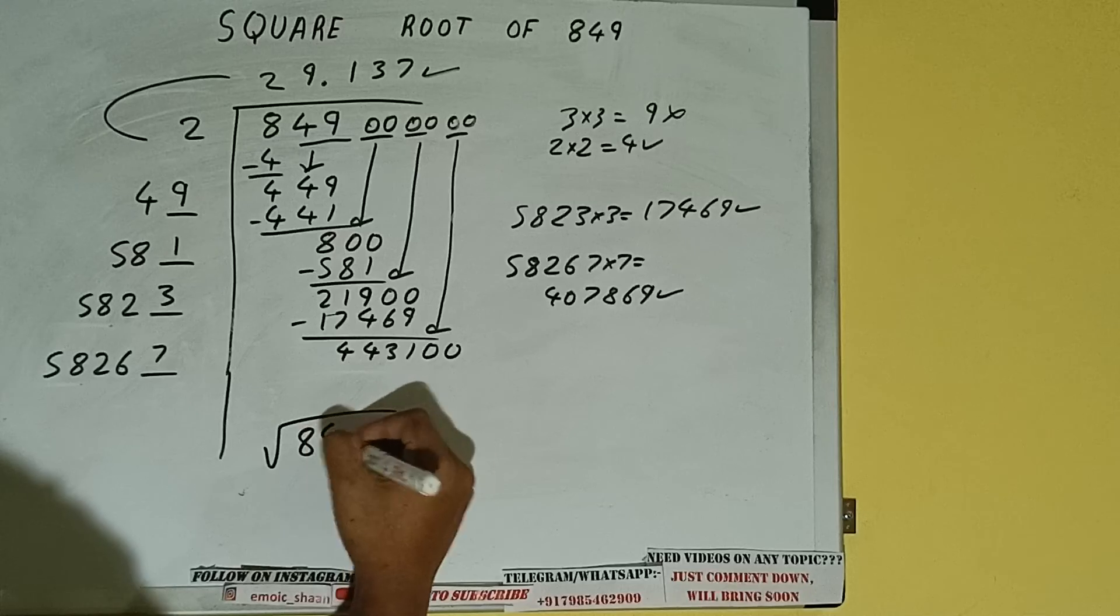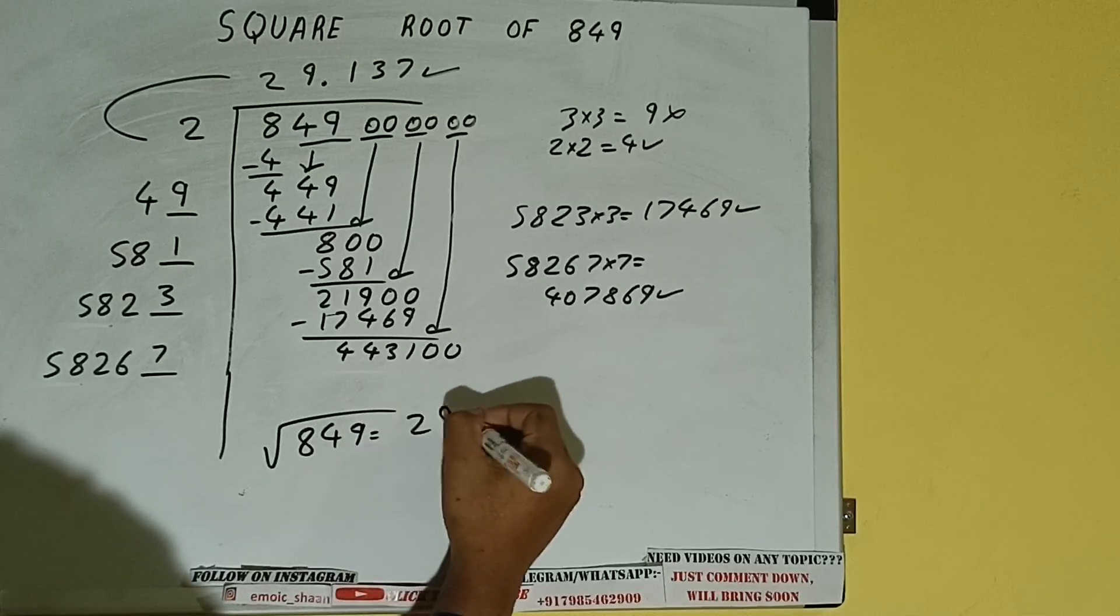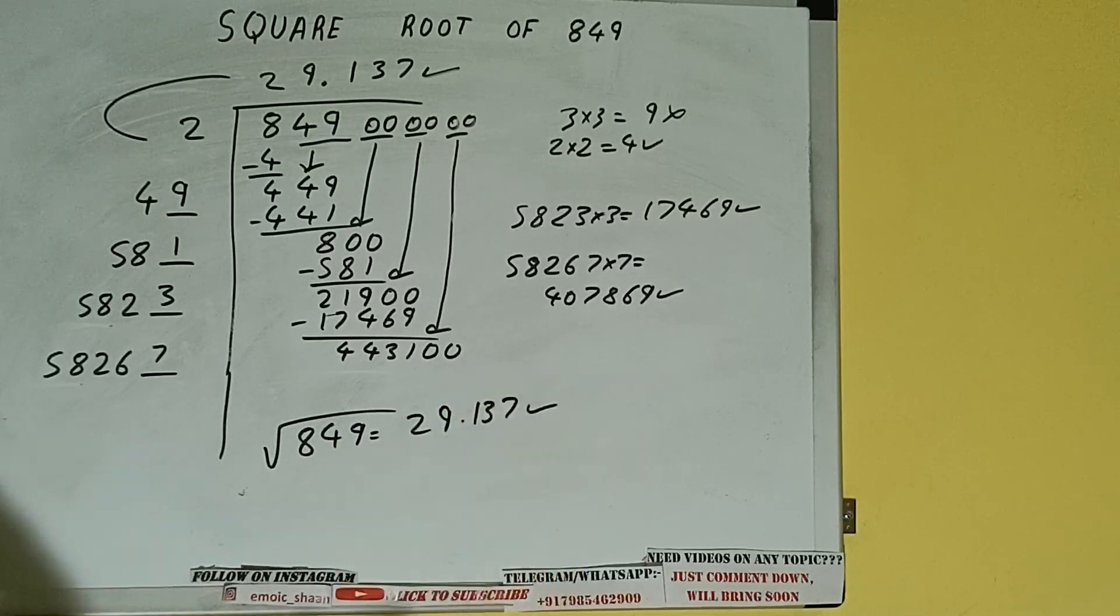So the square root of 849 will be 29.137. So this is all about square root of 849. If you found the video helpful, please do hit the like button. Do consider subscribing, and thanks for watching.